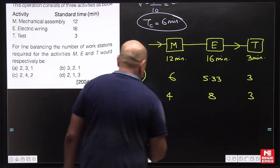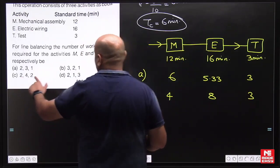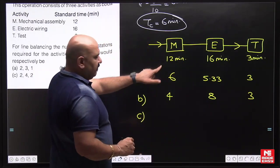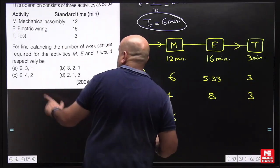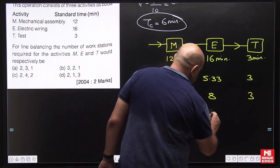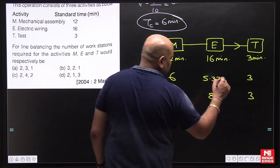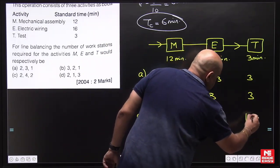Option C is 2, 4, 2. So 2 stations: 12 divided by 2 is 6 minutes. 4 stations: 16 divided by 4 is 4 minutes. And 2 stations: 3 divided by 2 is 1.5 minutes.